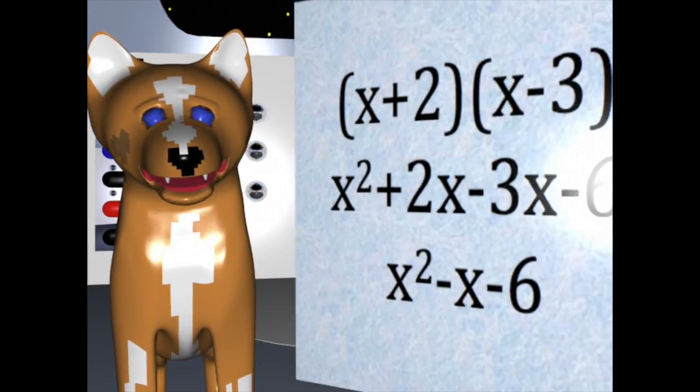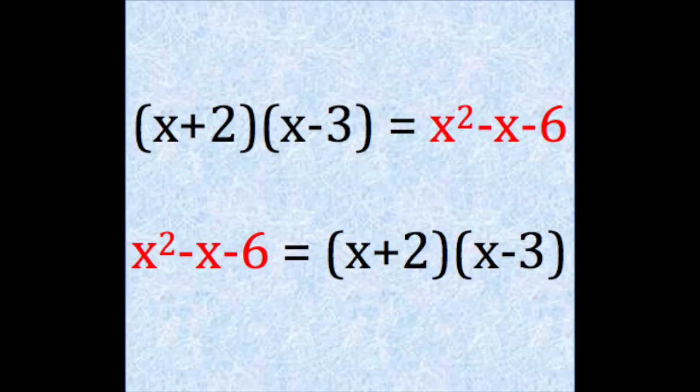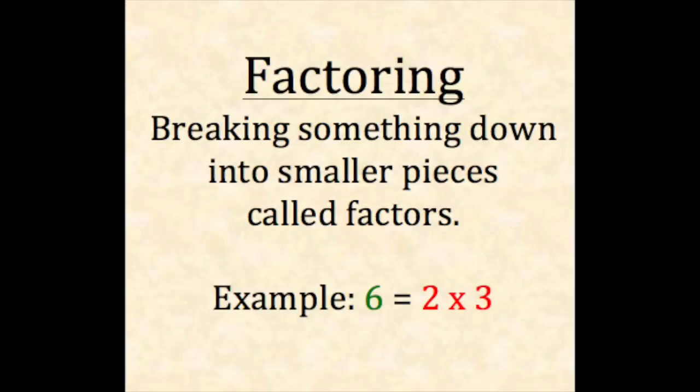You may remember expanding two binomials by using the foil method or maybe even the box method. Well, factoring a quadratic trinomial is the inverse operation of that process. Factoring means breaking something down into smaller pieces called factors.